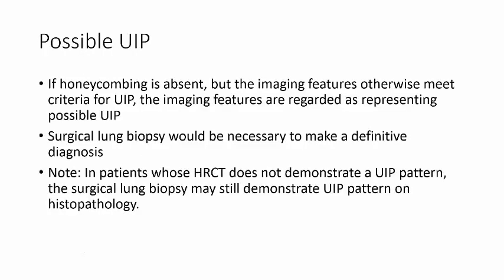There is also a category of possible UIP. If somebody has dense reticulation but honeycombing is absent, yet they still meet criteria for UIP, you can say this is possible UIP. In this scenario, to make a definitive diagnosis you need at least a surgical lung biopsy. Additionally, people who do not demonstrate a UIP pattern on HRCT may still have a surgical lung biopsy that shows a UIP pattern, so they may still have UIP.